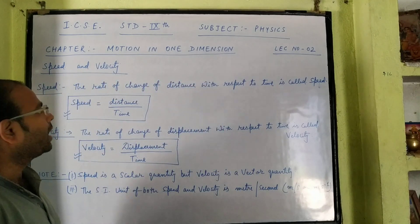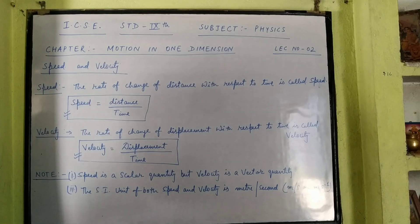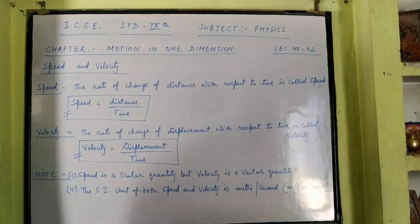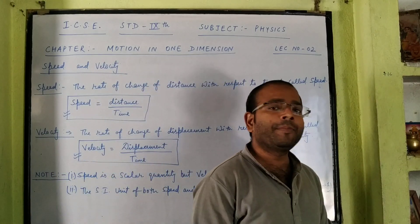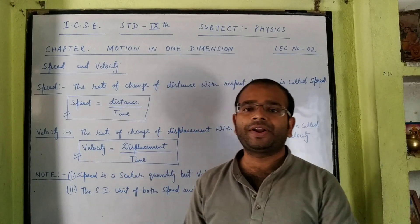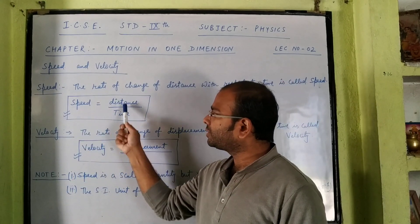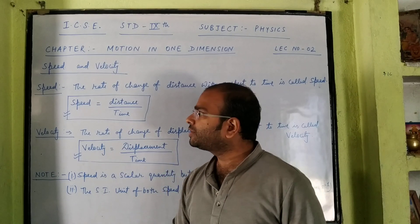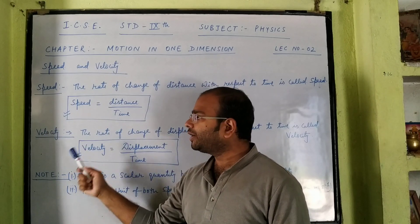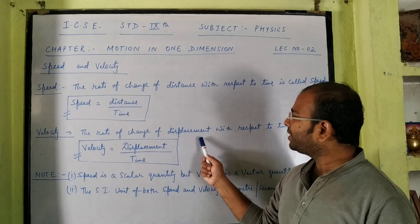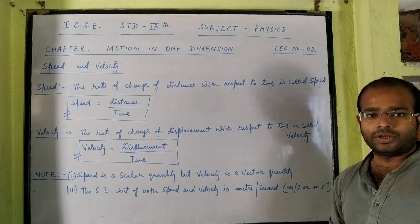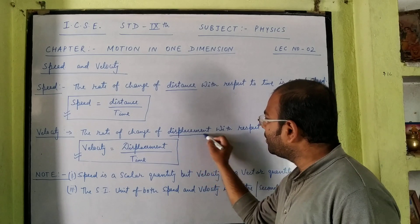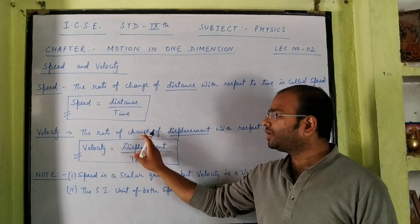The other parameters are speed and velocity. Speed is defined as the rate of change of distance with respect to time. Whenever we talk about the rate of any physical quantity, that physical quantity must be divided by time. So speed is equal to distance by time. Velocity has a very simple difference from speed — the rate of change of displacement with respect to time is called velocity. So velocity is equal to displacement by time.